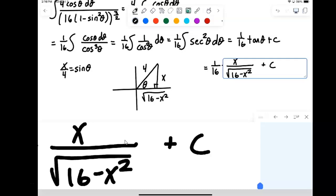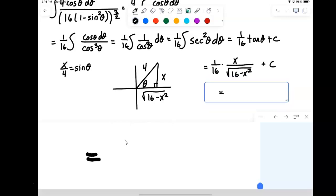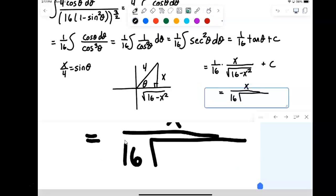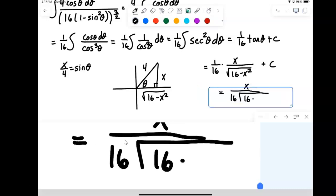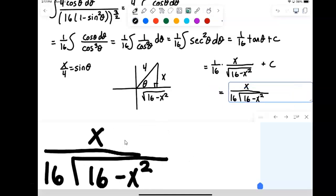And then just clean that up just a tiny little bit. I'm bringing that 16 in the bottom there with the square root. So I get, not 1, but x over 16 square root of 16 minus x squared. All right, plus a constant.